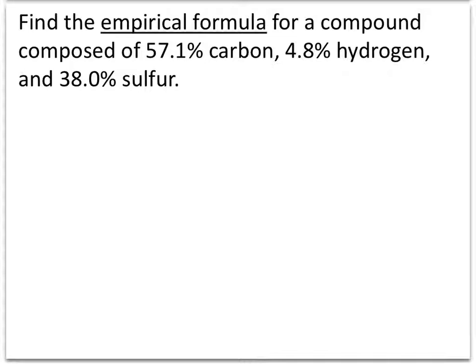The empirical formula is the root combination, or ratio, of elements in a compound, or the most reduced ratio. Step one will be to take each of these percentages and divide them by the molar mass of each element to establish a ratio.